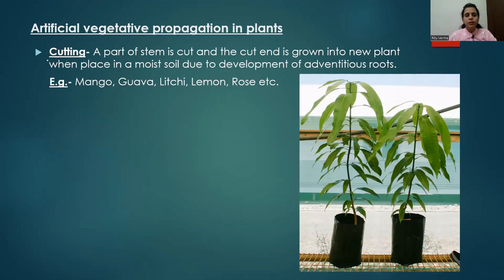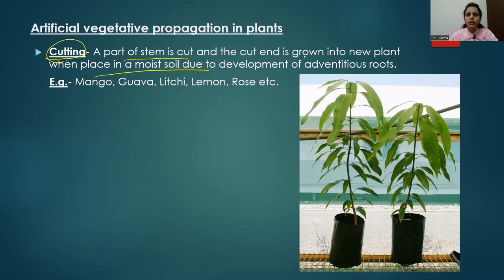The first method is cutting. As the name suggests, in this particular method a small part of the stem is selected carefully and then cut from the parent plant. When this small part of stem is placed in moist soil, there is a development of adventitious roots. Remember, these adventitious roots can grow only if nodes or internodes are present in the stem.